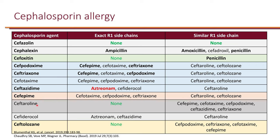Among commonly used cephalosporins: cephalosporin itself does not share a similar side chain with anything else. Cephalexin shares its side chain with ampicillin, amoxicillin, and penicillin. Cefoxitin shares with penicillin. Cefpodoxime shares with cefepime and ceftriaxone — so ceftriaxone, cefepime, and cefpodoxime share a side chain, and these are best avoided when one is causing a severe reaction. Ceftolozane has a similar side chain to cefpodoxime, ceftriaxone, and cefepime as well.